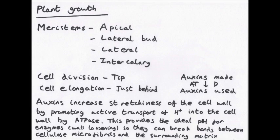Apical meristems are located at the tips of the roots and shoots — these make the roots and shoots get longer. Lateral bud meristems are found in the buds and could give rise to side shoots. If you've ever seen a plant, you'll see a little bud poking out — that's where the side shoots can form.